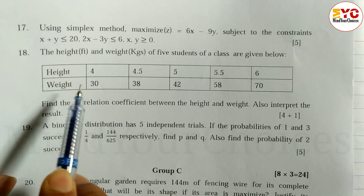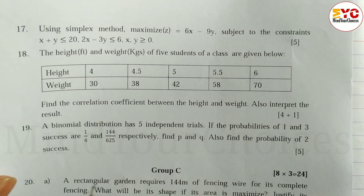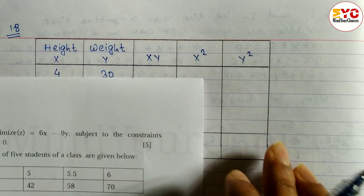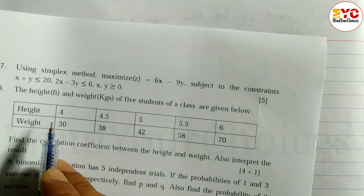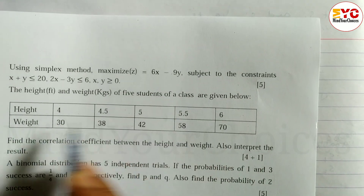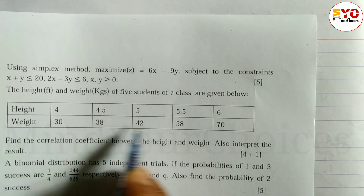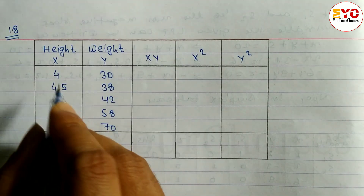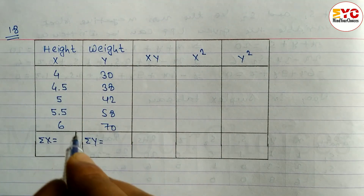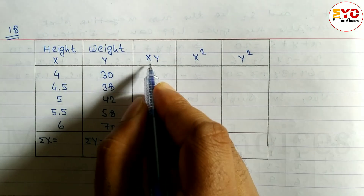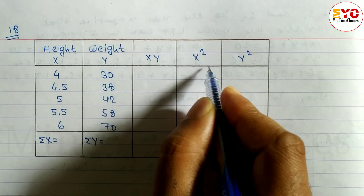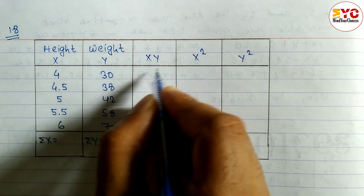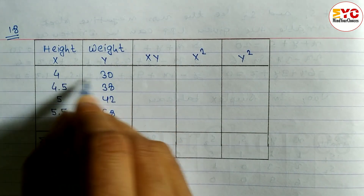First of all we have to find out the correlation coefficient. Suppose height is equal to x and weight is equal to y. We find out x values for height, then compute xy, x squared, and y squared columns.